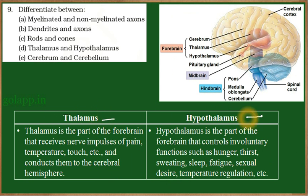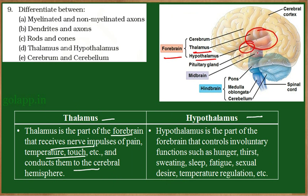The next comparison is thalamus and hypothalamus. Both regions are present in the forebrain. The thalamus is a part of the forebrain that receives nerve impulses of pain, temperature, touch, etc., and conducts them to the cerebral hemisphere. It acts as a relay station — impulses from organs first come to the thalamus and then go to the respective part of the forebrain, and motor signals from the forebrain also relay through the thalamus before passing to the respective organs.